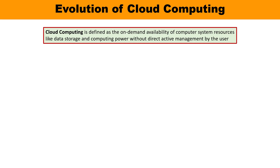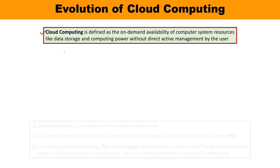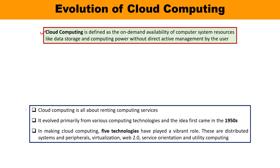First, let me remind you what cloud computing is about — I have discussed it in detail in the previous video. Cloud computing is the combination of two words: cloud plus computing. It is the on-demand availability of computer system resources such as data storage, applications, and computing power, with no direct active involvement of the user. You are essentially renting computing services, paying for what you use. This idea came into the picture initially in 1950.